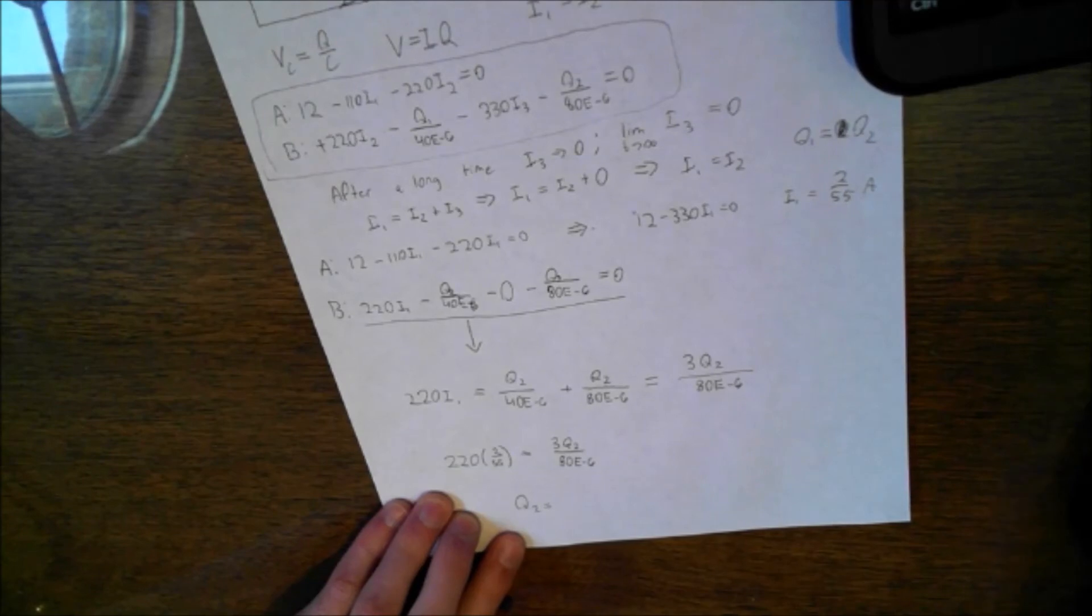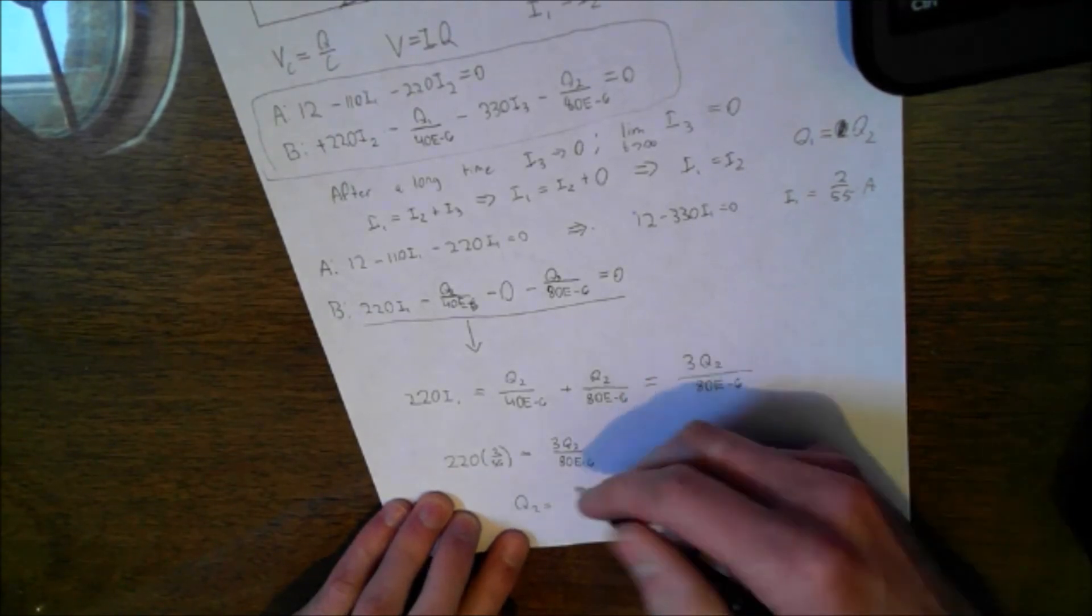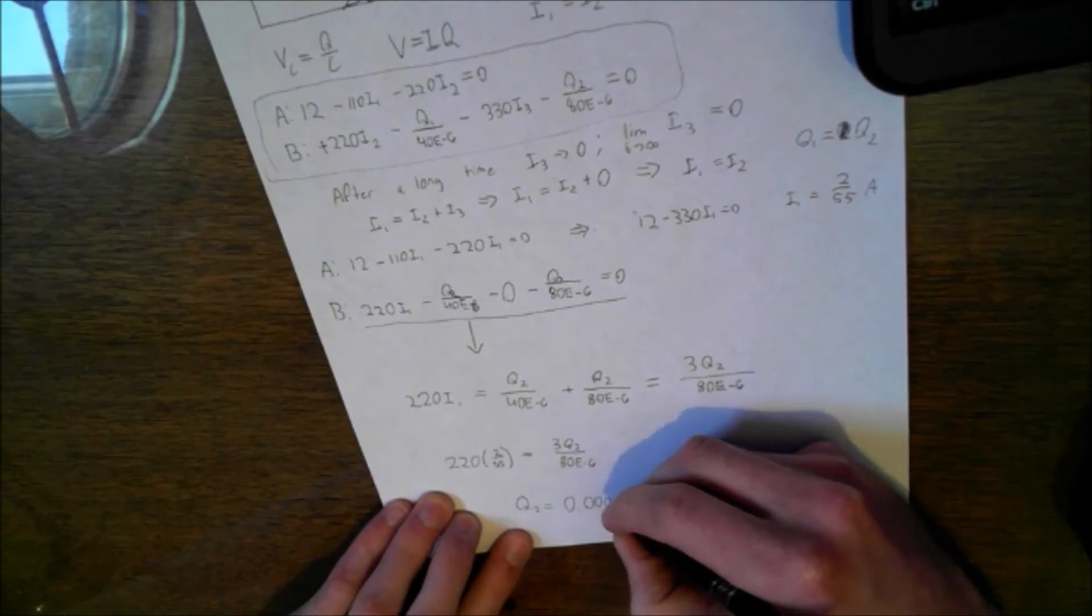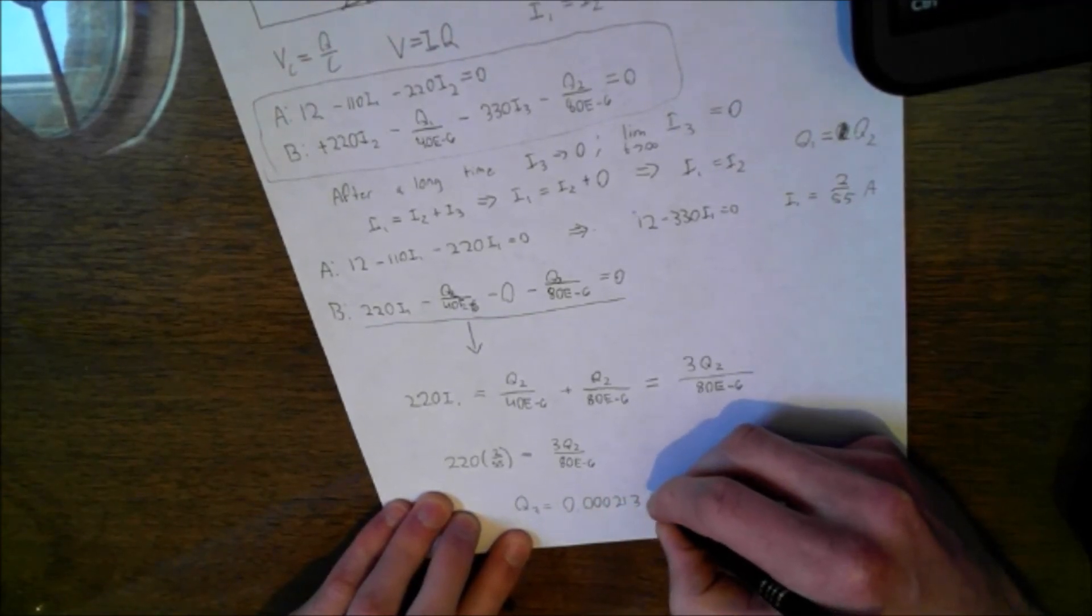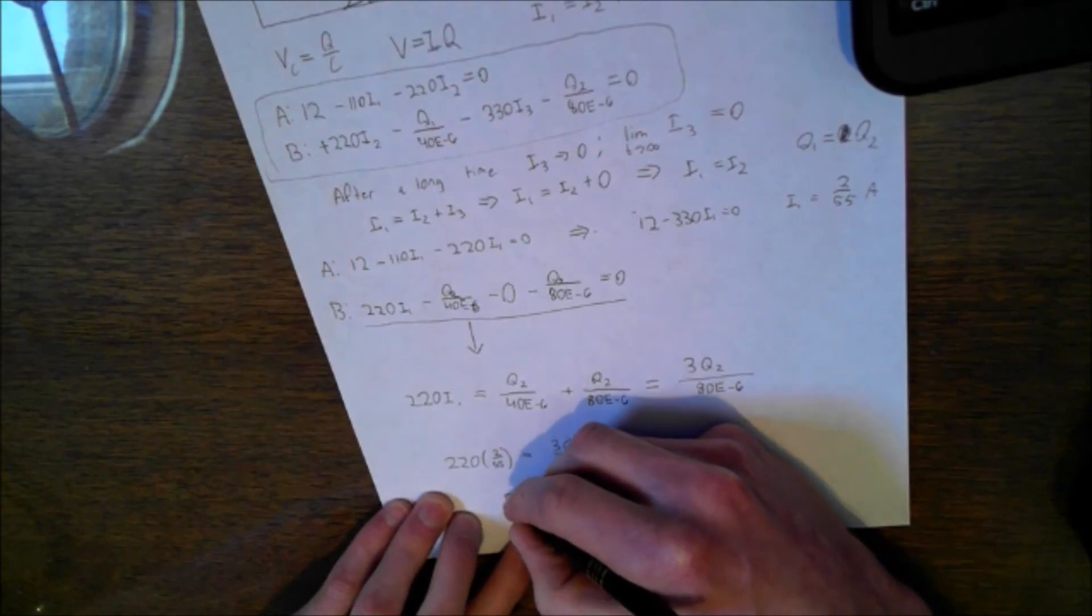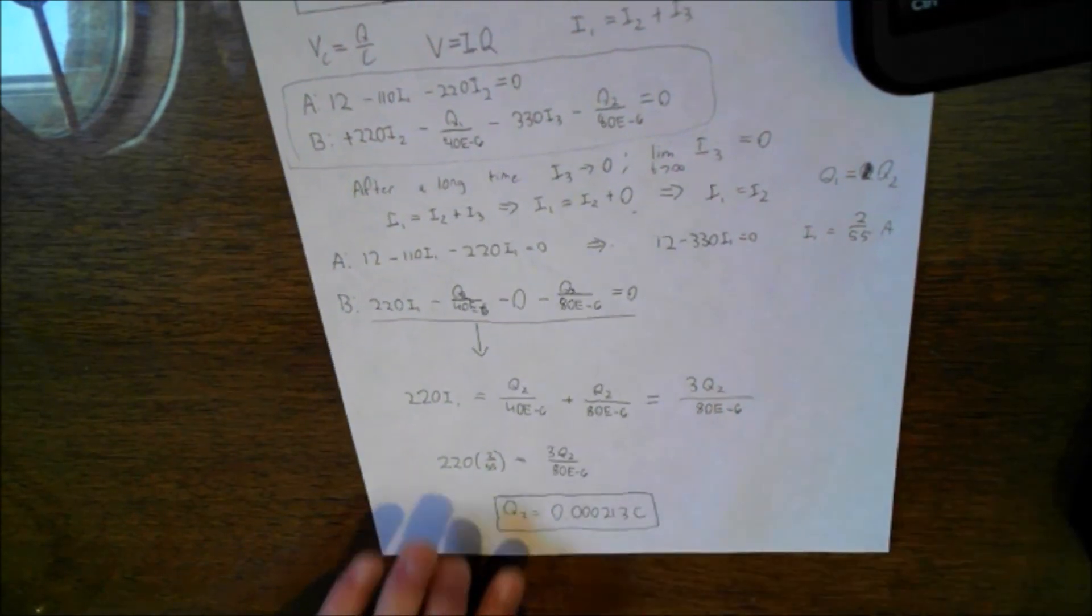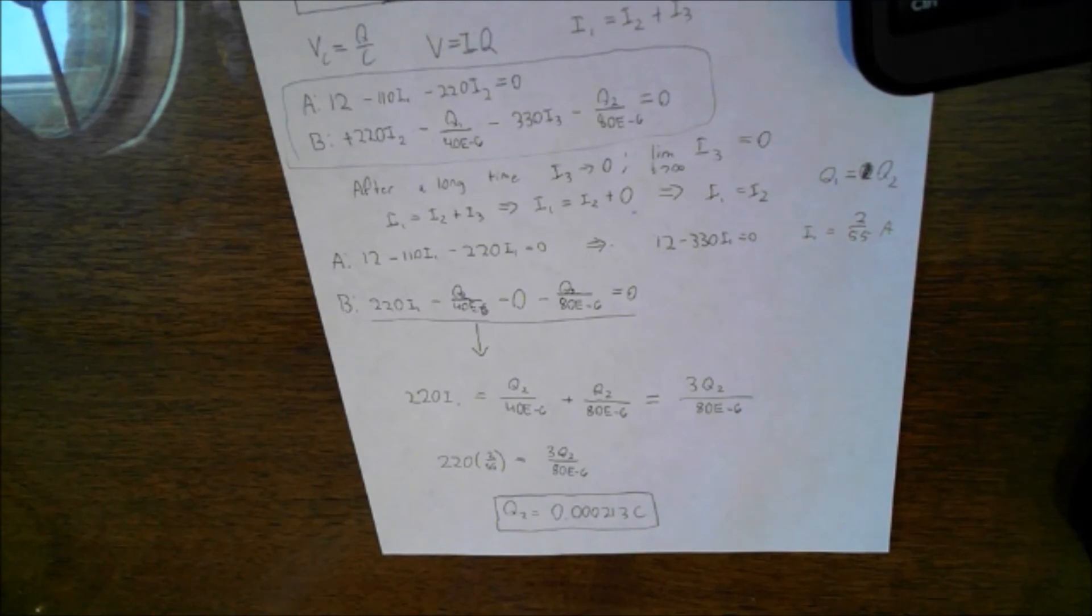Okay, 0.000213 coulombs. So that's going to be our answer. And if I type that in, let me just check. 0.000213, enter. Alright, and it shows that the answer is indeed correct.